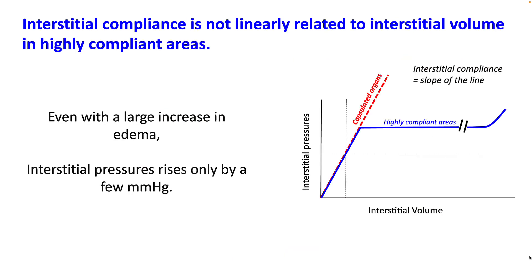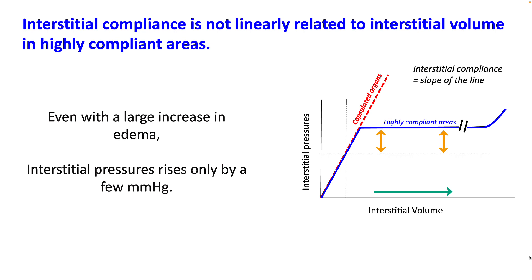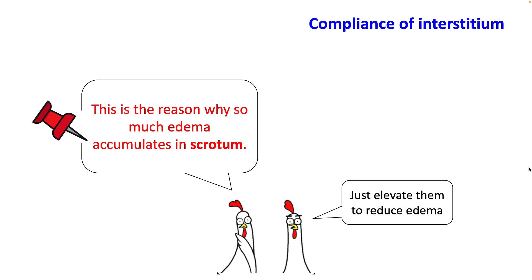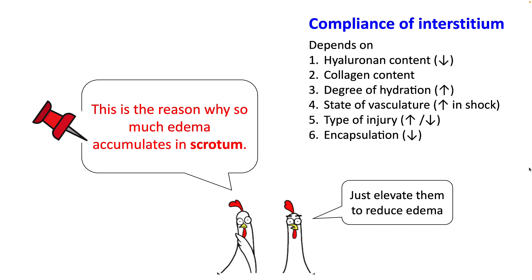Interestingly, interstitial compliance is not linearly related to interstitial volume in highly compliant areas — even with large increases in edema, interstitial pressure rises by only a few millimeters of mercury. This is why edema occurs so commonly in scrotal areas, as they are highly compliant. Compliance of the interstitium depends upon hyaluronan and collagen content, degree of hydration, and whether organs are encapsulated.